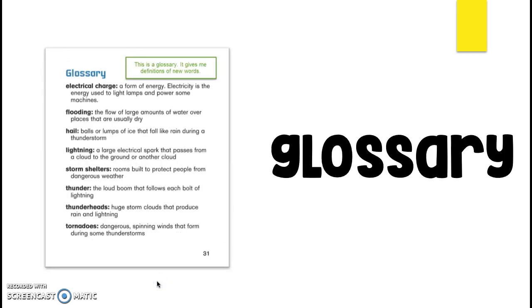The glossary is another text feature that you'll find at the back of the book. The glossary gives definitions or meanings for new words we might not be familiar with. Glossaries are really helpful when you're reading something new that you're not sure about what a vocabulary word might mean. So for example, this glossary has the word thunder. Did you know thunder is the loud boom that follows each bolt of lightning? Ooh, I don't really like thunder, do you? Yeah, it's way too loud. Thanks, glossary.